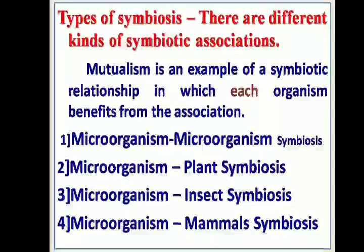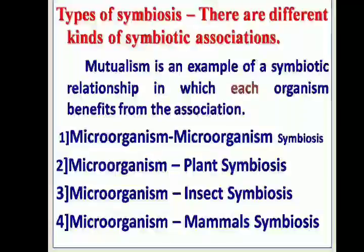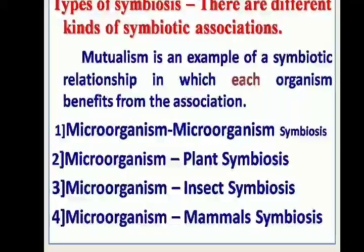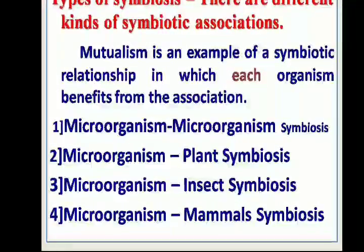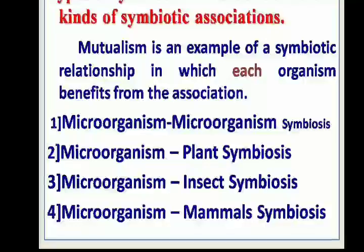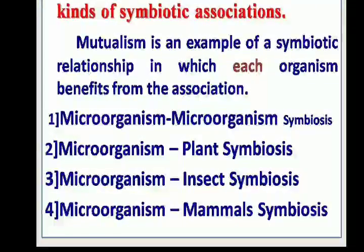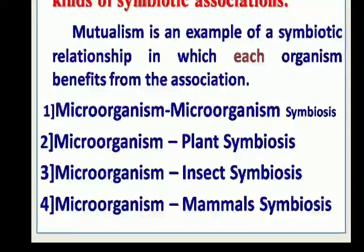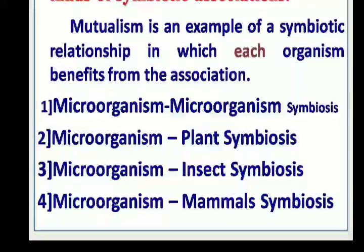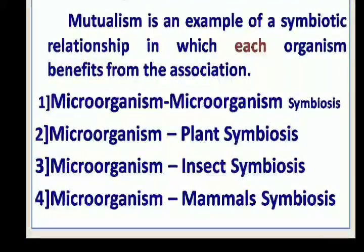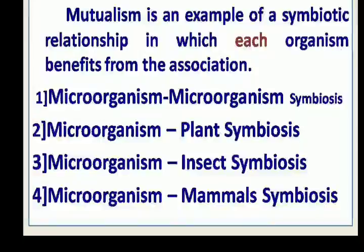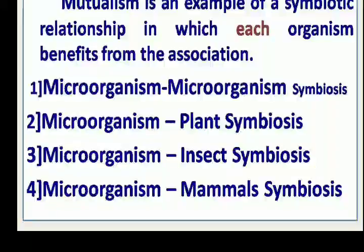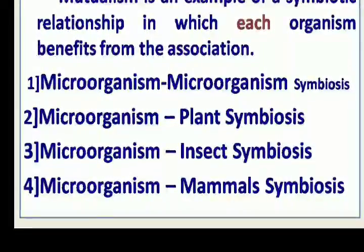There are different kinds of symbiotic association depending on the type of organism involved. The first kind is Microorganism-Microorganism Symbiosis. In the second type, the association is formed between Microorganism and Plant. In the third kind, the association is between Microorganism and Insect. In the fourth, the association is between Microorganism and Mammals.